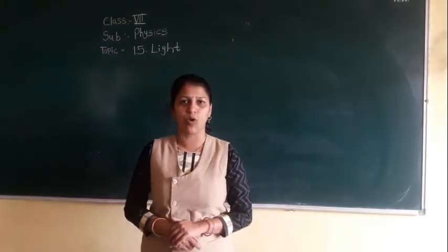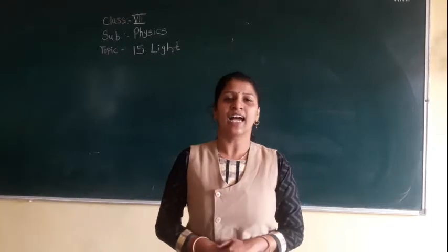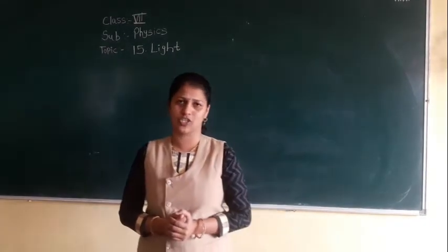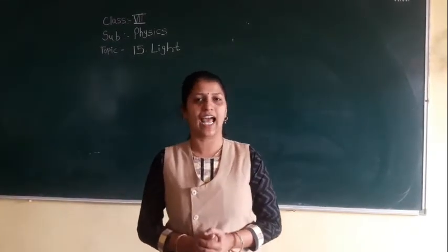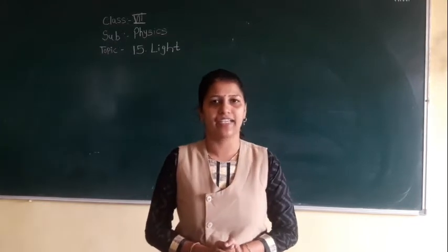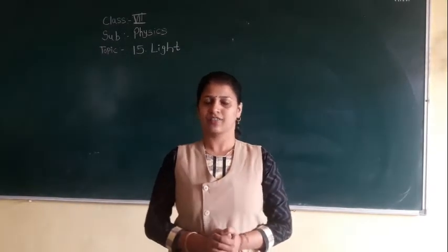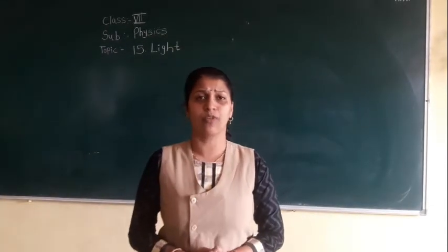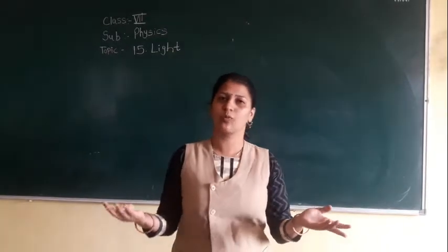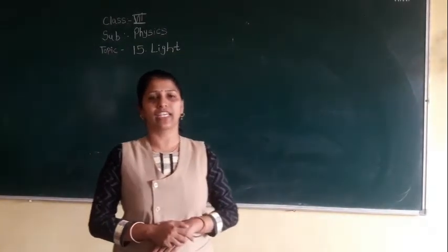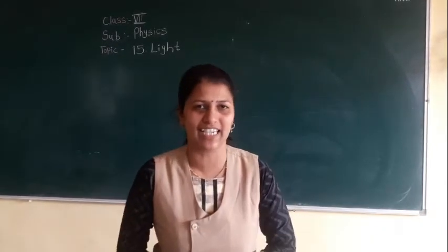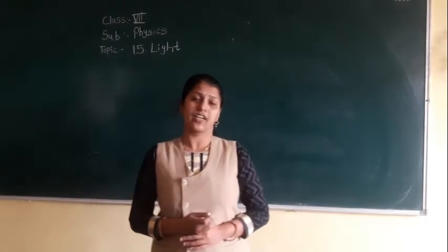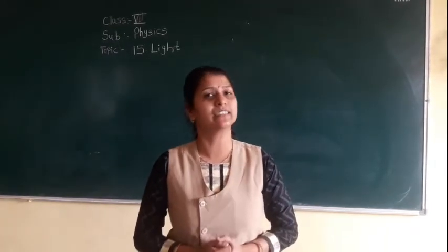So can you tell me what exactly is light? Light is a form of energy. We have already learned this in class 6, that is light and its shadow. We get light from the sun. The sun is the main source of light. Everything depends on the sun.